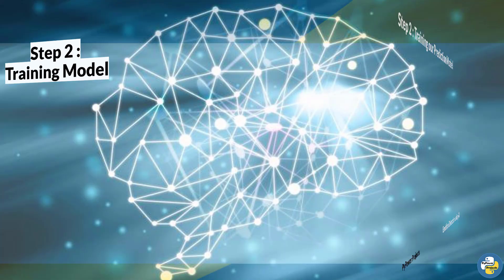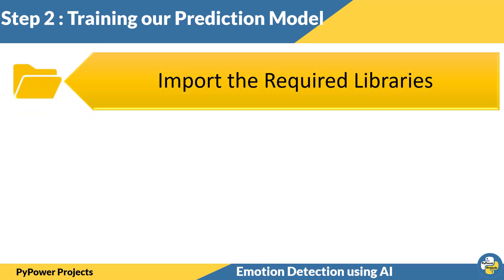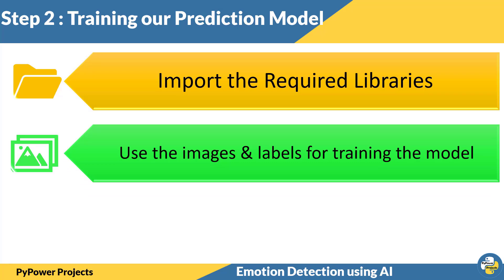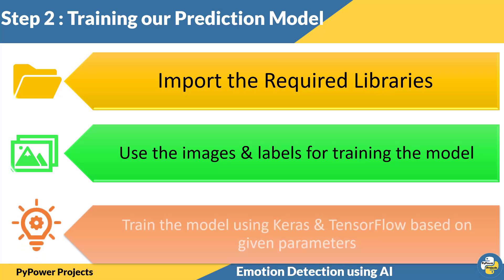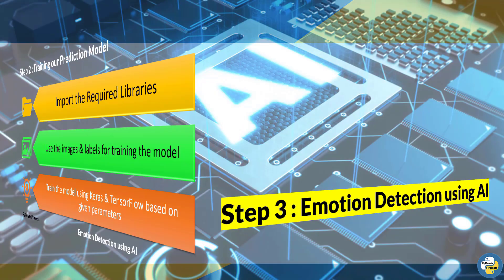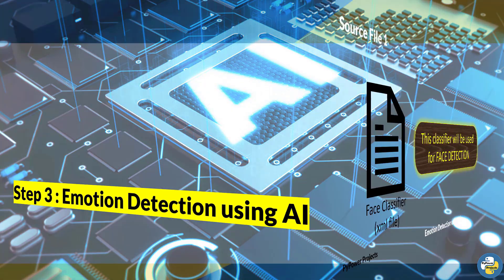Step two: training the model. In this, again there are total three steps. First, we will import the required libraries. Second, we will use the images and labels for training the model. And finally, using Keras and TensorFlow, based upon given parameters, we will train the model.